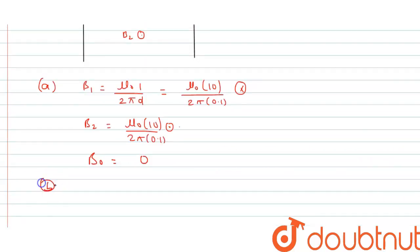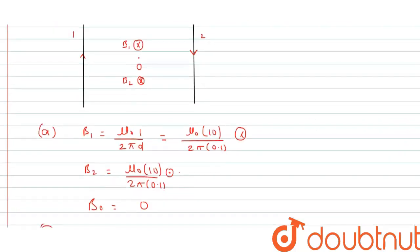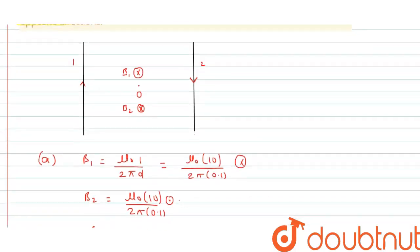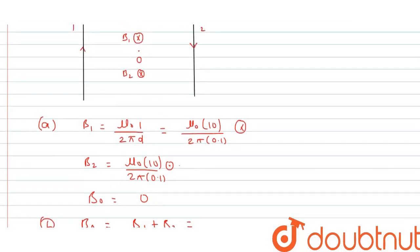Now in Case B, when the currents are flowing in opposite directions — that means if we reverse the direction of current in wire 2, let's say downward — then the magnetic field due to wire 2 at O is also in the inward direction. The net magnitude will remain the same because the distance and current are the same.